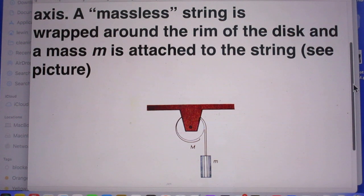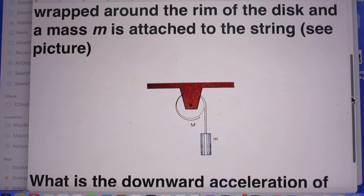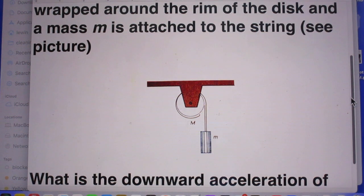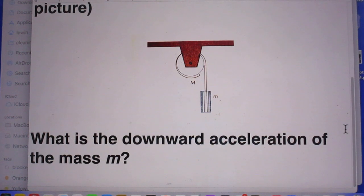A massless string is wrapped around the rim of the disk and a mass m is attached to the string. Look at the picture.